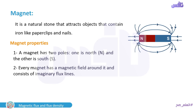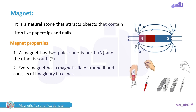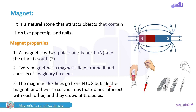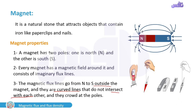We imagine that there are lines, but in real life there are no actual lines — we just imagine them. Number three, as seen in the figure, the magnetic flux lines go from north to south outside the magnet, and they are curved lines that never intersect with each other.